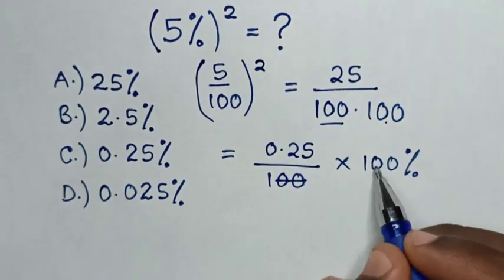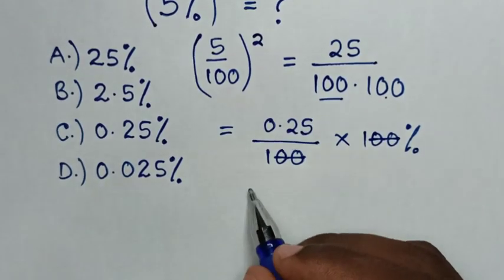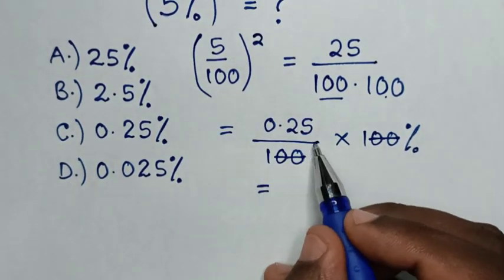Then these two zeros will cancel with these two zeros, so it will be equal to 0.25%.